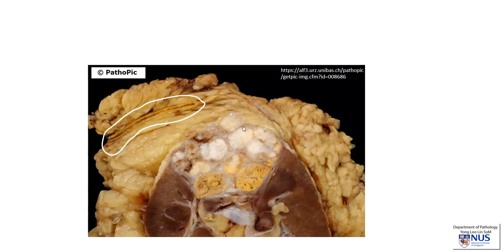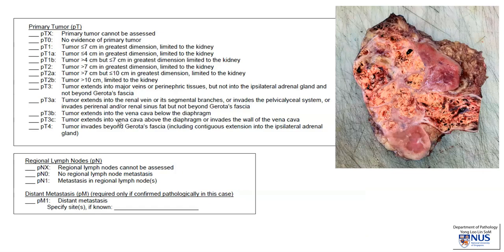However, what we can see is that there is tumor that seems to extend beyond the renal capsule, which I am outlining here. The renal capsule is breached here, and the tumor has gone beyond it into the perinephric fat. Looking at the staging, this would again be at least PT3 because it is extending into the major veins or perinephric tissue. In this instance, it's probably PT3A because it's going into the perirenal fat, and we often have to confirm our impression on microscopic sections.